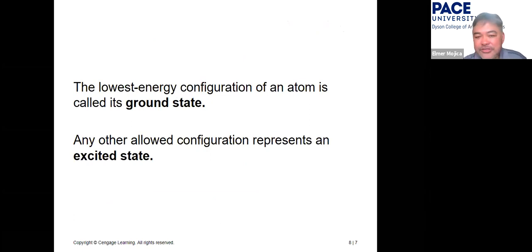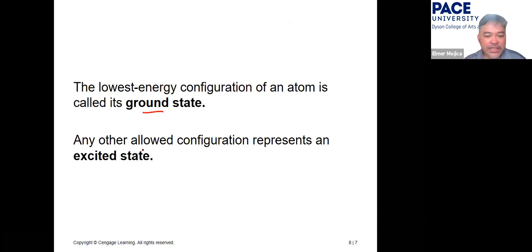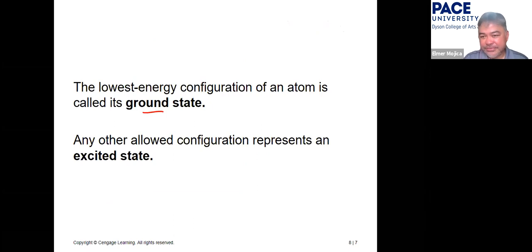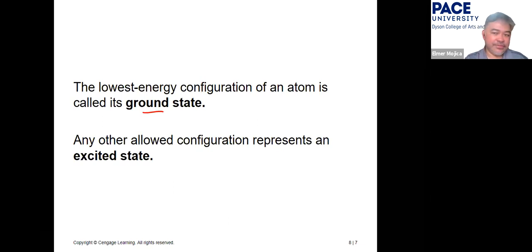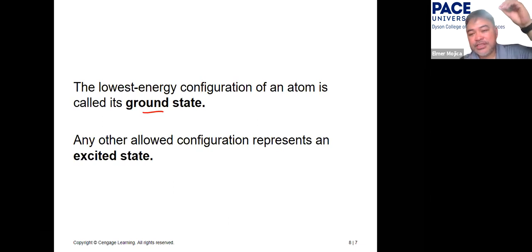The lowest energy configuration is called the ground state, and any other allowed configuration represents an excited state. If you follow the ground state configuration, you fill up each orbital according to energy level. In an excited state, one electron is promoted to an orbital with a much higher energy level.